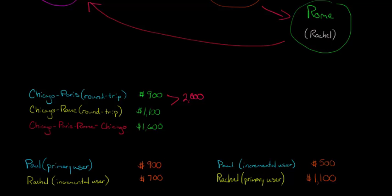We could also flip it the reverse way, though, and say, well, if Paul's the incremental user and Rachel is the primary user, it'd be $1,100 to visit just Rachel, and then because it's $1,600 to visit both, the extra $500 is allocated to Paul. Here was the problem, though,